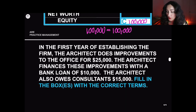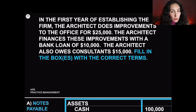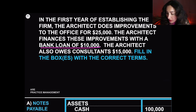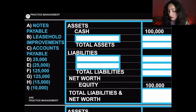Let's move on to part three. In the first year of establishing the firm, the architect does improvements to the office for $25,000. The architect finances these improvements with a bank loan of $10,000. The architect also owes consultants $15,000. Fill in the boxes with the correct terms. Are you ready to dive in on your own? Pause the video now and try this question.